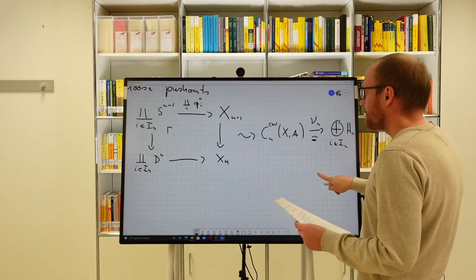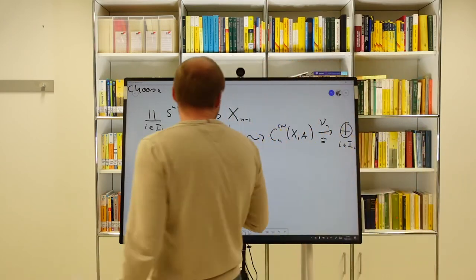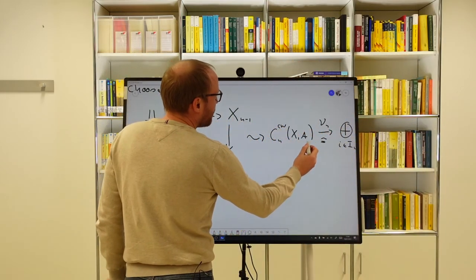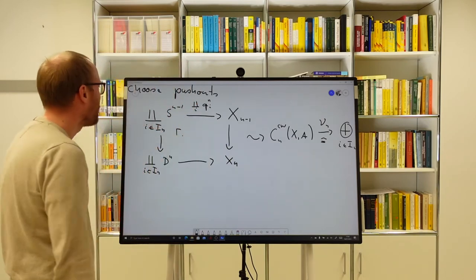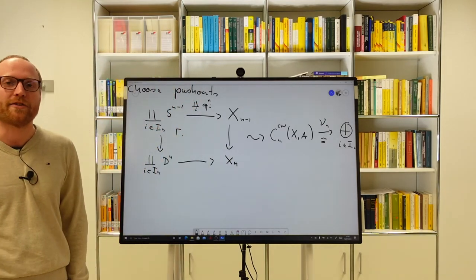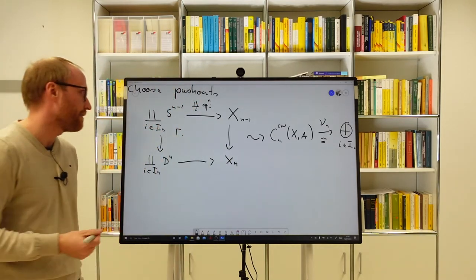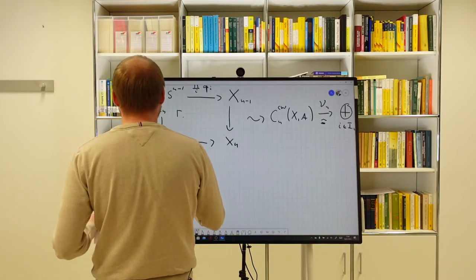We already know how the objects in our cellular chain complex look — that's the isomorphism μ_n. The question now is how do the differentials look, and this is what we want to answer in this video.